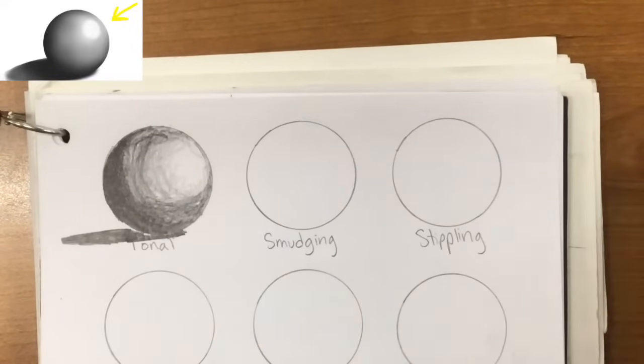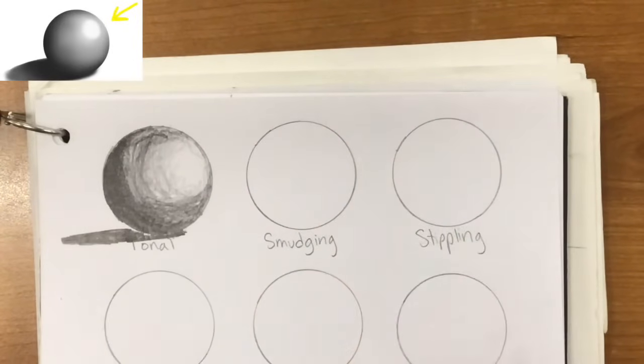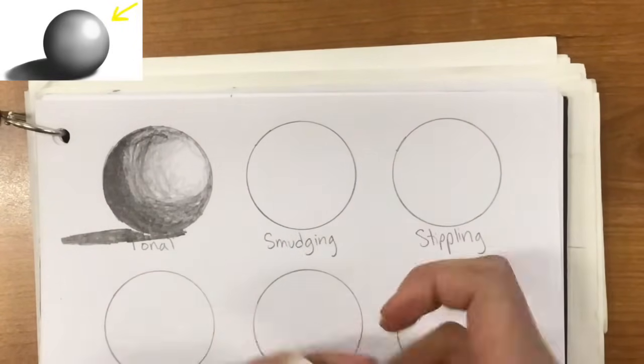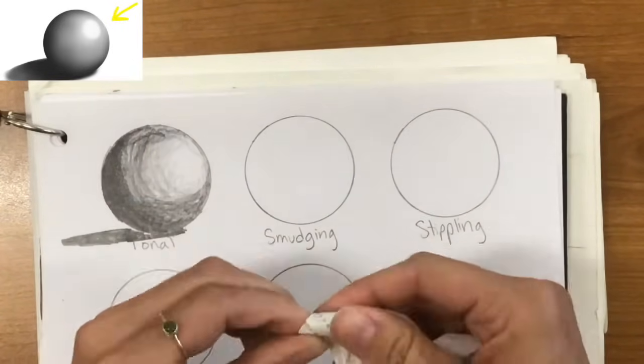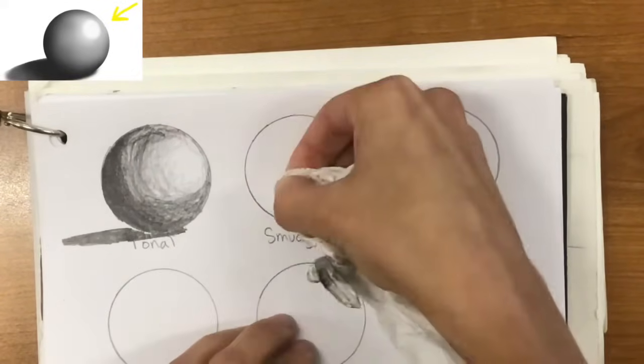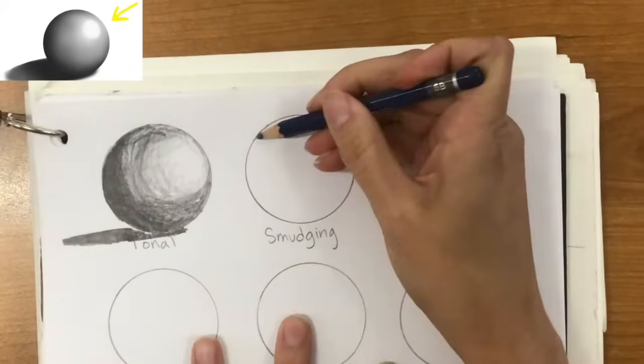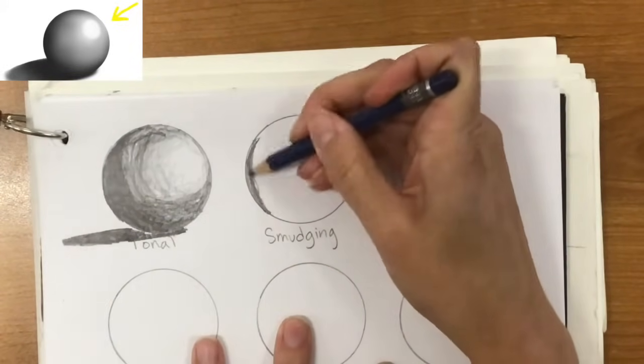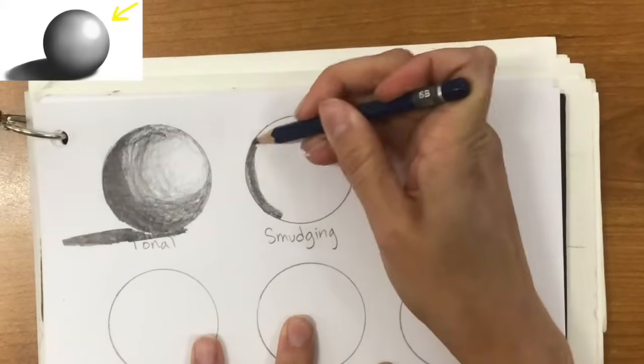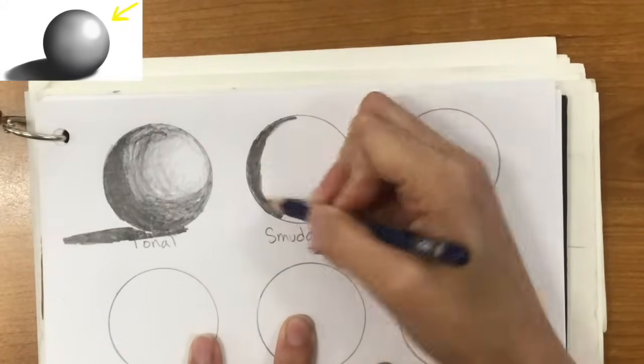Now with smudging, you're actually going to use either your finger. I find that your finger is not very precise. So I like to use a paper towel and kind of twist the edge a little bit or fold it into a point. Kind of like that. And that way I can smudge with that. So I'll use that in just a second. But first I'm going to start with that same technique as I just did with my tonal shading. I'm going to take my 6B pencil.